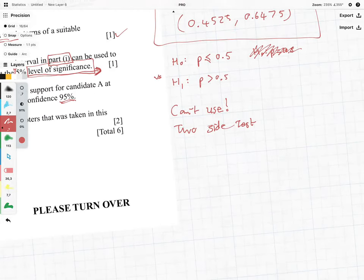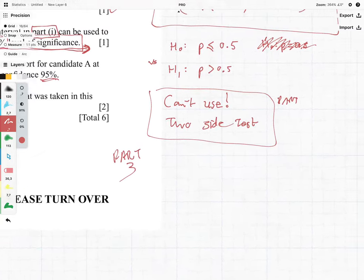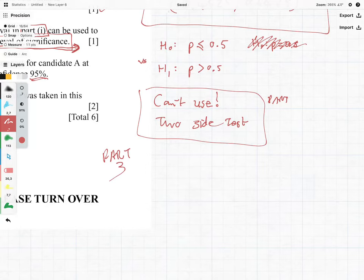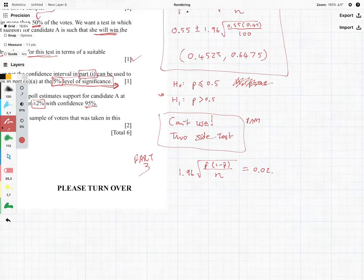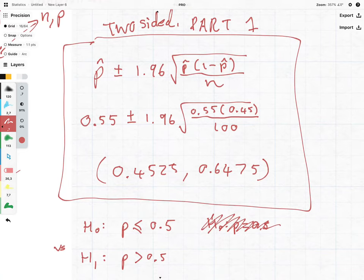So this is part three. In part three what we have is the following equation: we have 1.96 times the square root of p hat times 1 minus p hat over our n, and we want this to be equal to 0.02. Okay, if you're wondering where am I getting that, remember this chunk, this part here is the width that we're adding to our confidence interval.